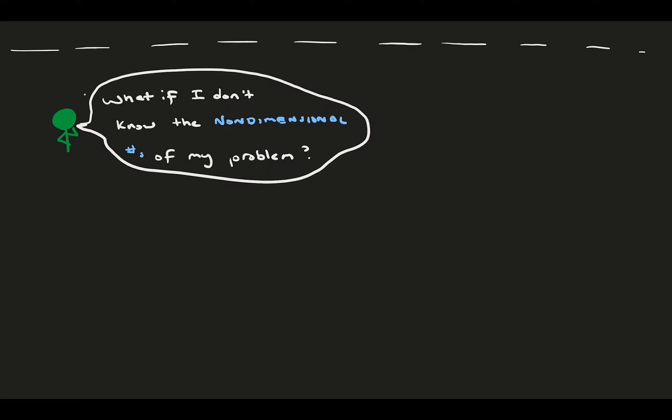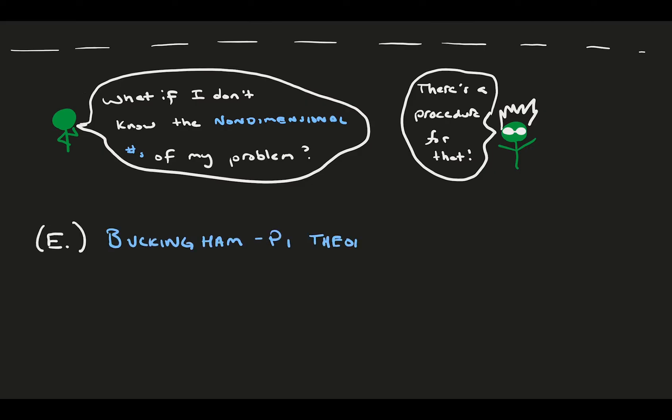Say you're new to a fluids problem, or you just have a set of variables outside of fluids, and you want to analyze for functional relationships between those variables. What if you don't already happen to know the non-dimensional numbers of your problem? Well, there's a procedure for that. Following a set of rules, we can arrive at every possible non-dimensional parameter. And this brings us to the Buckingham Pi theorem.